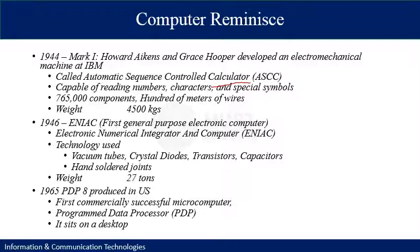The Mark 1 used around 0.8 million components and hundreds of meters of wire to connect them — it was like a large room. Another similar device was developed in 1946 named ENIAC, the first general-purpose electronic computer. ENIAC stands for Electronic Numerical Integrator and Computer. Like other first-generation machines, it used vacuum tubes, crystal diodes, transistors and capacitors, which were hand-soldered. The real development started in the 1940s.